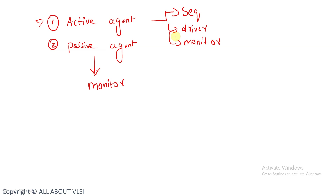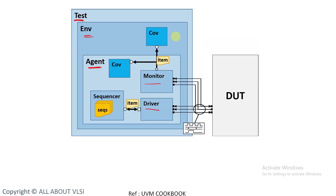If the agent is active, it will have the sequencer, driver, and monitor, and will communicate with the DUT. If the agent is passive, it will only have the monitor and everything else will be disabled. How to configure it as active or passive will be covered in detail when we do the coding. That's all for this session — if you like this video please like, share, and subscribe to my YouTube channel all about VLSI.